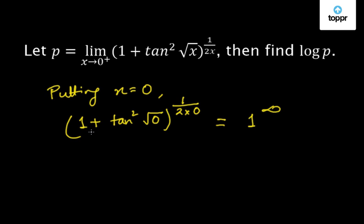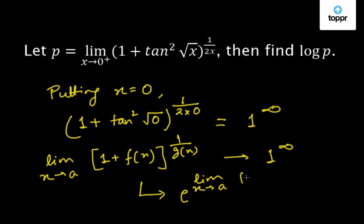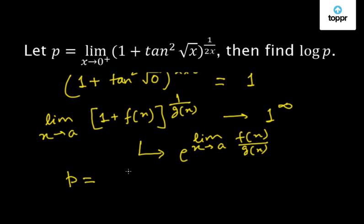We know that if a limit is of the form: limit x tends to a of (1 + f(x)) whole to the power 1 by g(x), and it is of the form 1 to the power infinity, then we can write this limit as e to the power limit x tends to a of f(x) by g(x). So we can write p equal to e to the power limit x tends to 0 plus of tan²√x by 2x.